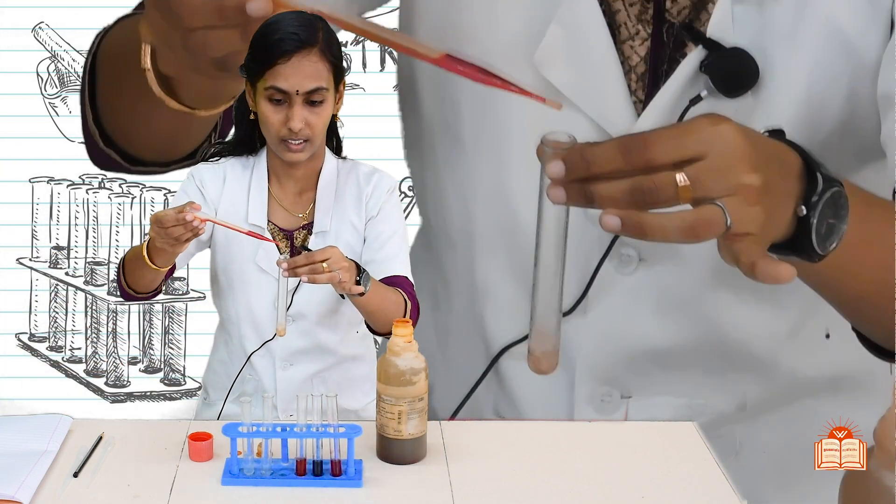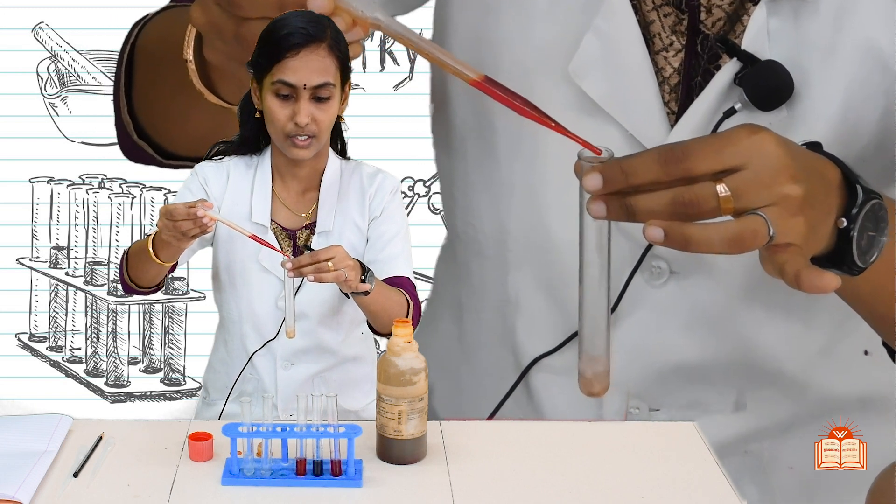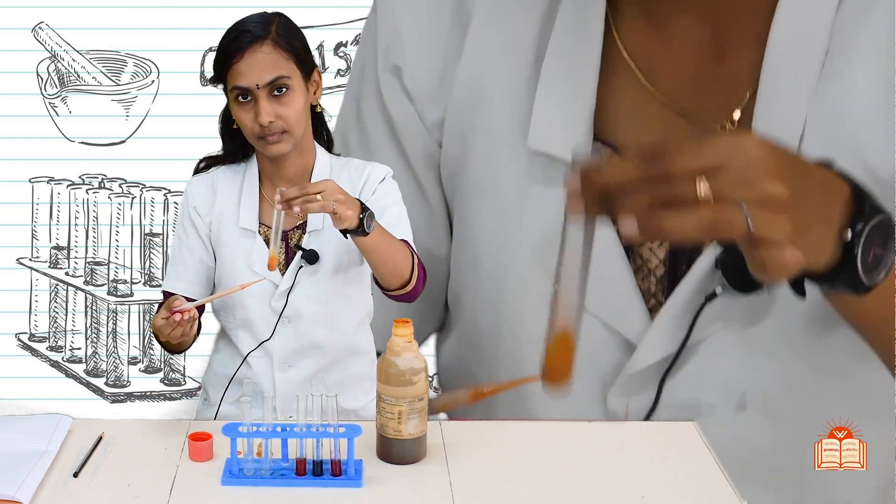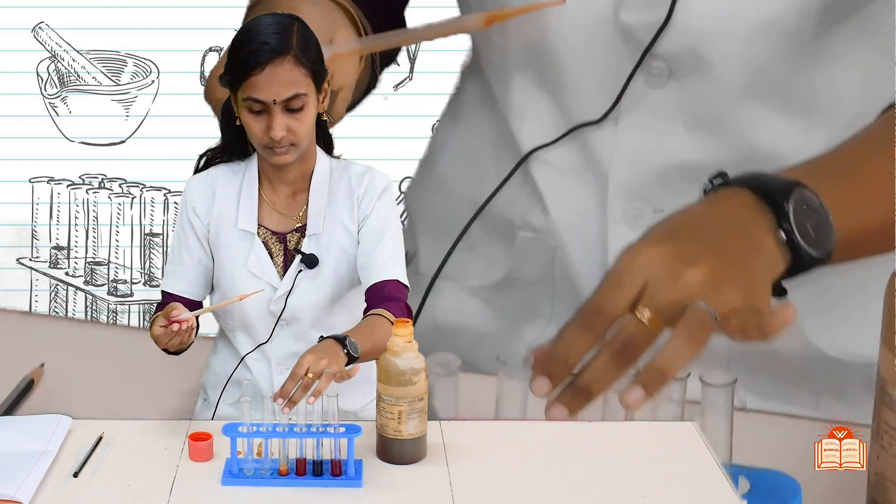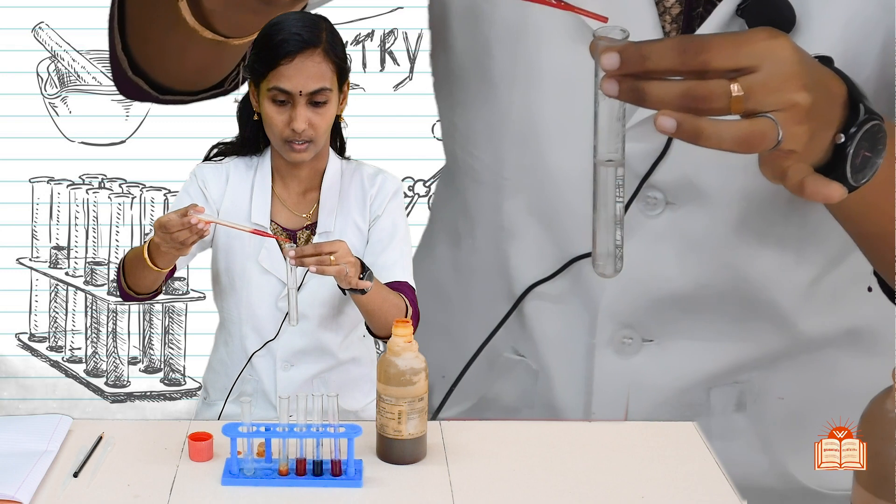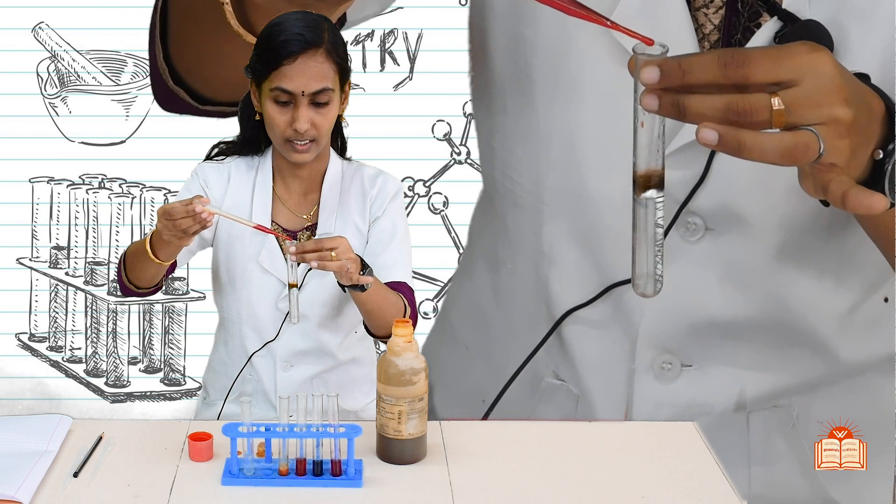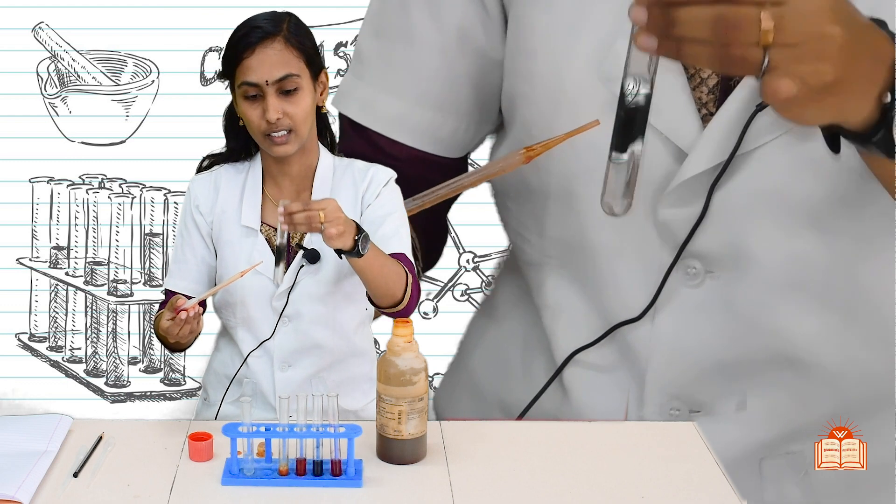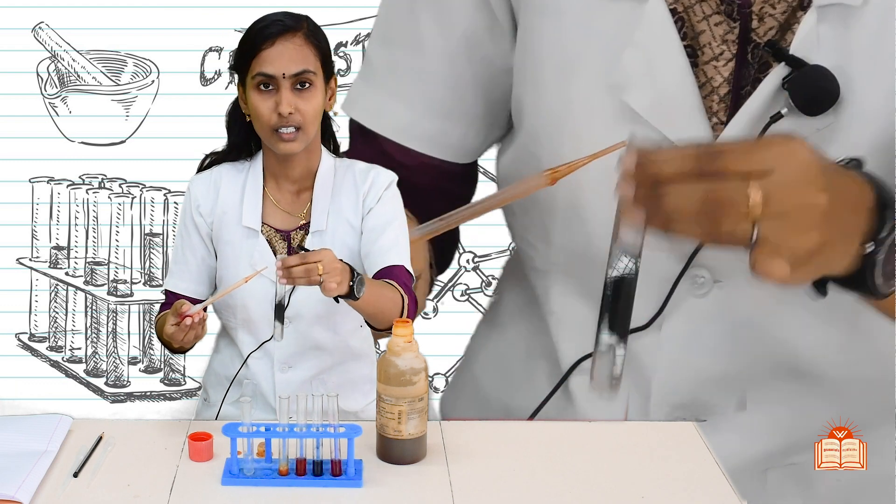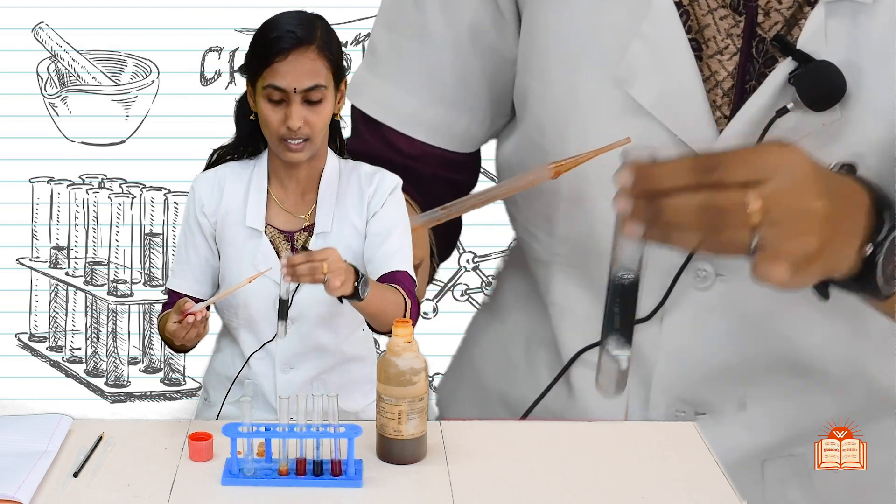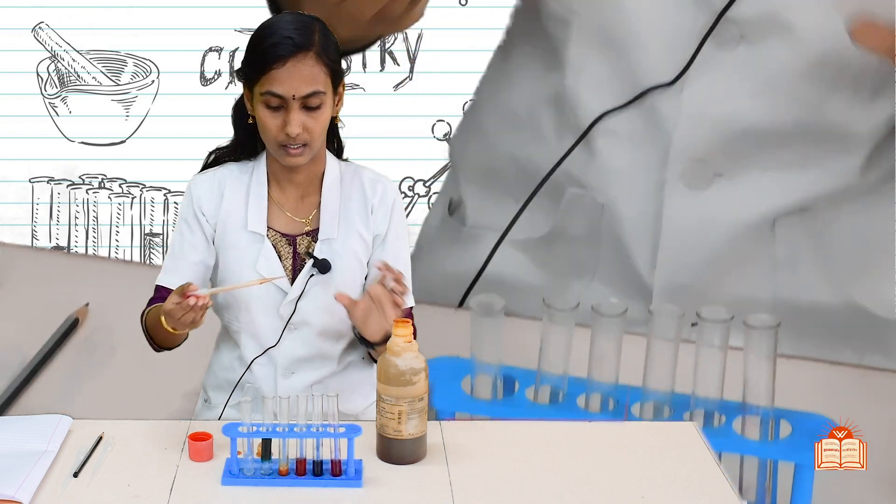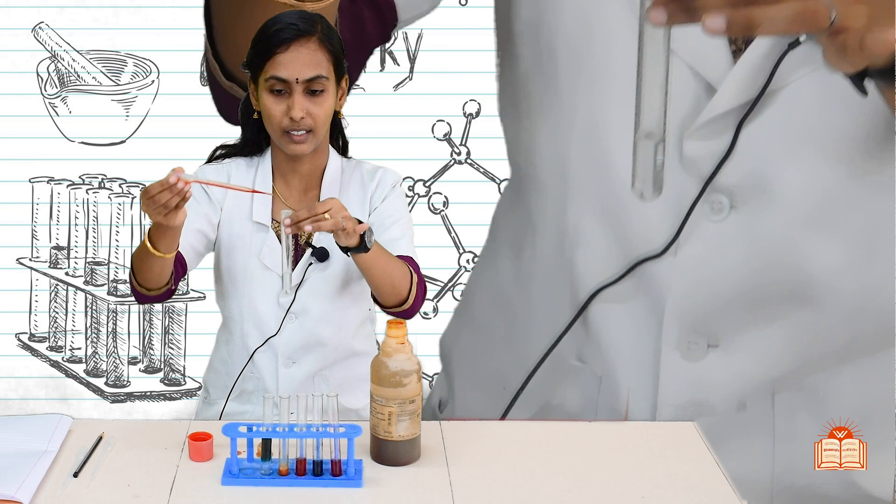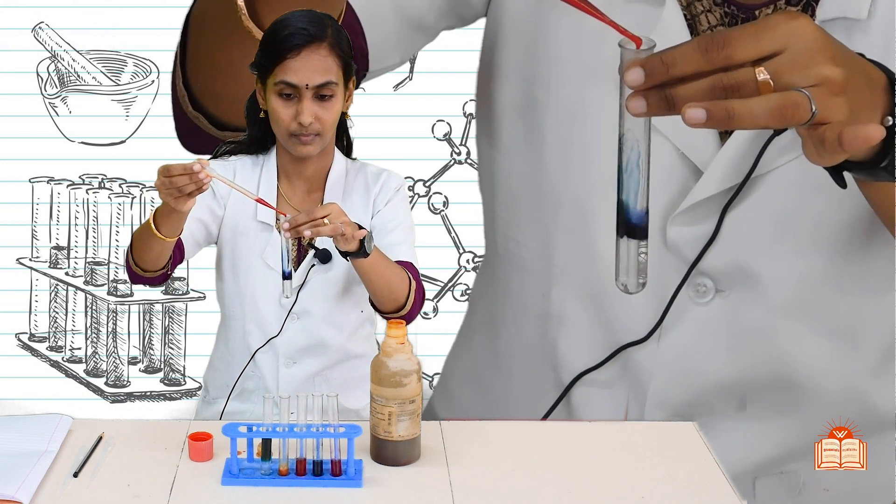Next solution is orange juice solution, see the color. Then water, we are adding to the water, see it turns to green color. Green color indicates the solution is neutral. And finally sodium bicarbonate solution.